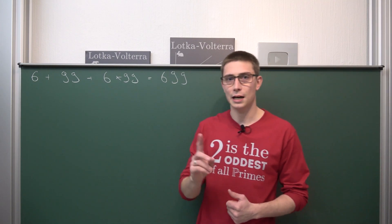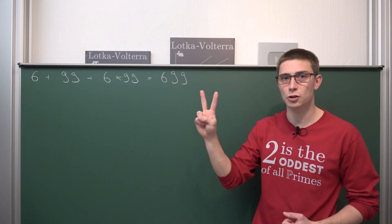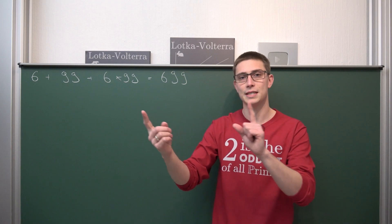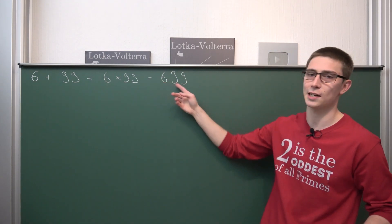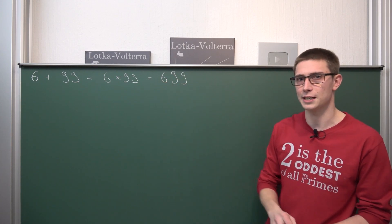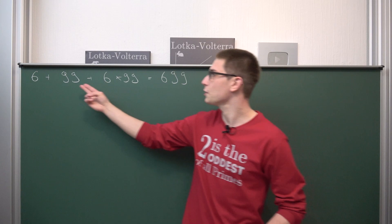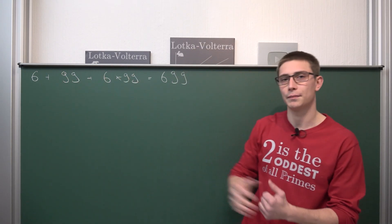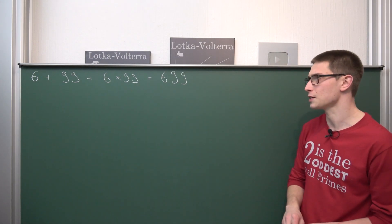One thing to notice is that concatenations do not commute. The concatenation of a,b is not the same as the concatenation of b,a — obviously, because 699 is not equal to 996. So we always have to have the concatenation of 9s at the back; this has to be the second number, just as a little side note.